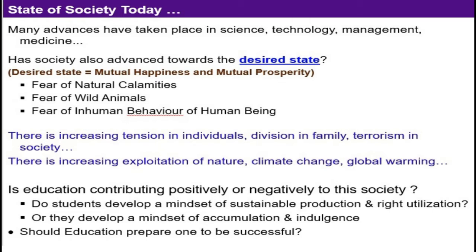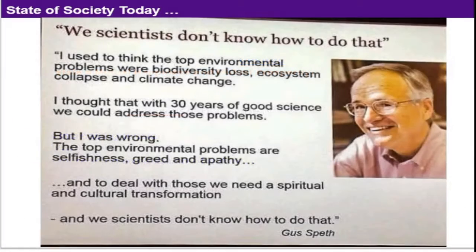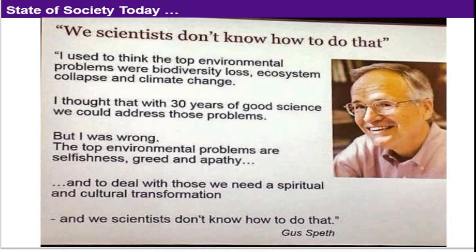Should education prepare one to be successful? August Speth told that we scientists do not know how to do that. They thought the top environmental problems were biodiversity loss, ecosystem collapse, and climate change, and that using 30 years of science they could address these problems. But finally, they analyzed that the top environmental problems are selfishness, greed, and apathy. So to solve this, we need a spiritual and cultural transformation.